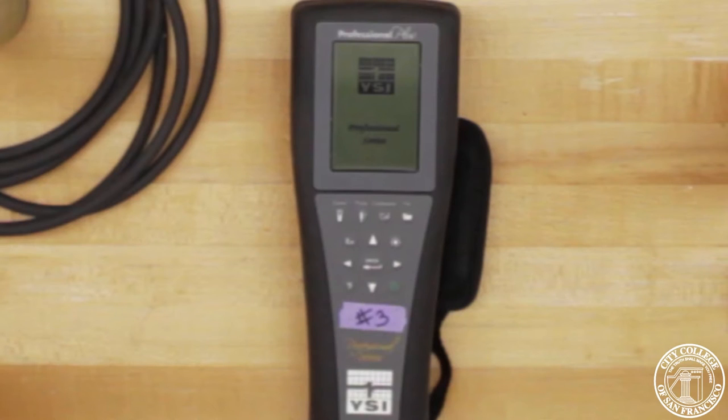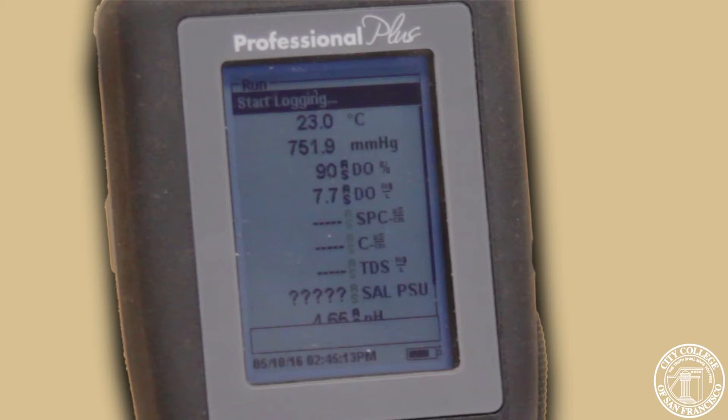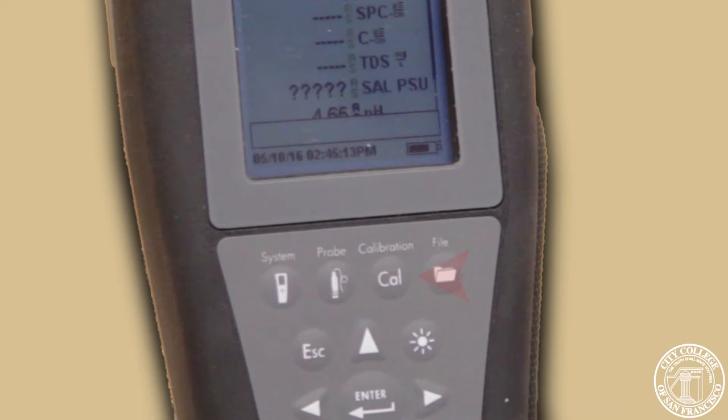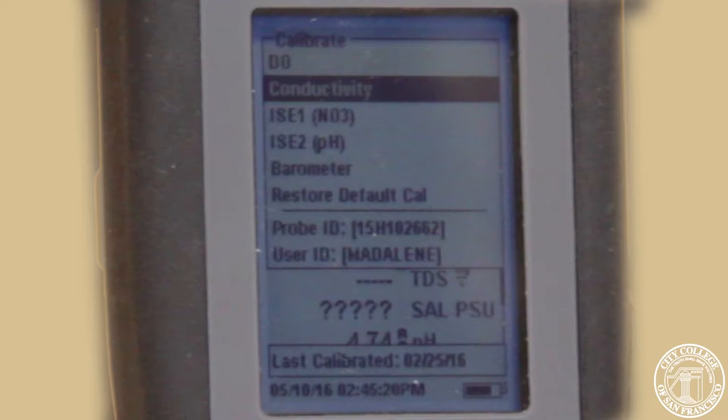Next, we're going to turn on our meter. Our meter is going to show the run screen. We want to calibrate instead. We're going to go down and select IC2PH. That's where our port is at.